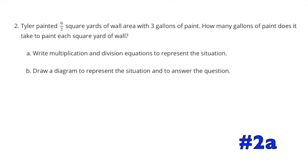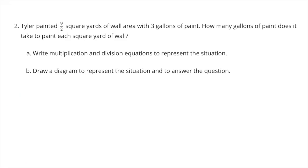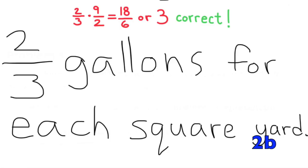Problem 2: Tyler painted nine-halves square yards of a wall with three gallons of paint. How many gallons of paint does it take to paint each square yard? Write multiplication and division equations: nine-halves times what number equals three, and three divided by nine-halves equals what number. Drawing the diagram: three gallons covers nine-halves square yards, so it takes two-thirds gallons of paint for each square yard. Two-thirds times nine-halves equals three.